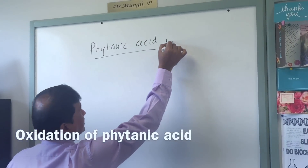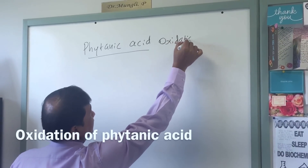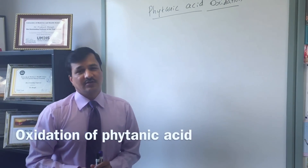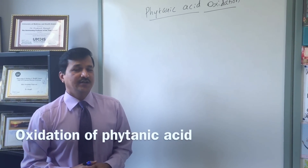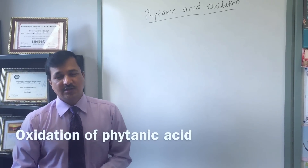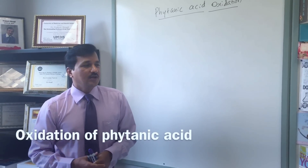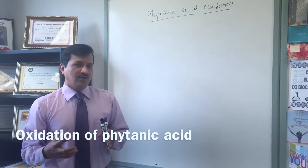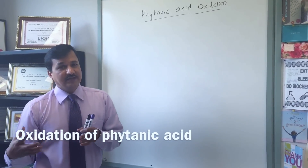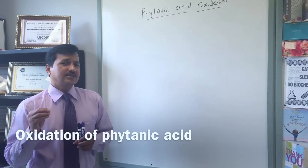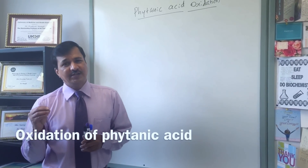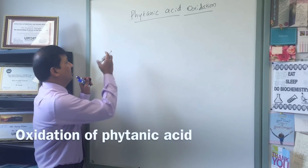Phytanic acid is basically a derivative of chlorophyll degradation in our intestine, or it may be chlorophyll degradation in animals which eat grass, like ruminant animals such as cows. When you consume green leafy vegetables, the chlorophyll part is fermented by bacteria in the intestine. Chlorophyll is converted to phytol — there is something called phytol from chlorophyll degradation.